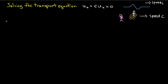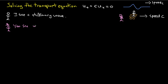So let's write that down and make this mathematically precise. I see a stationary wave, and you see a wave with speed c. You also see the transport equation — you look at u and say this wave satisfies the transport equation. Now the key question is: what PDE do I see?